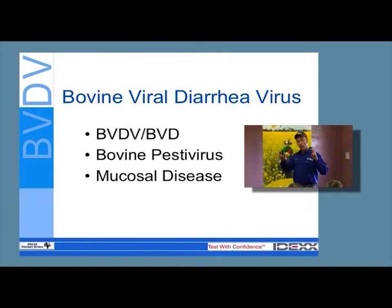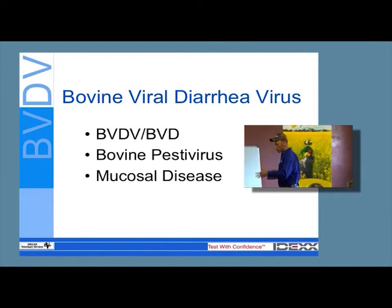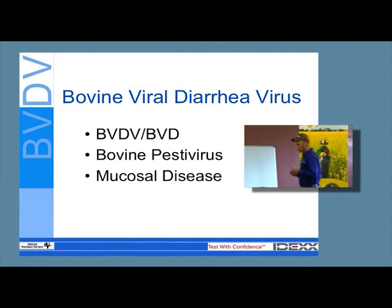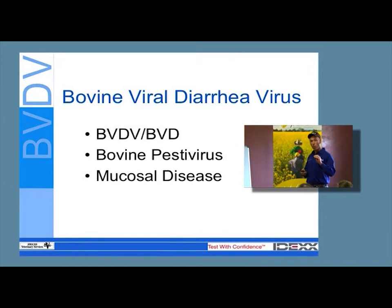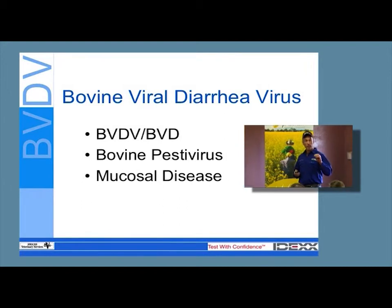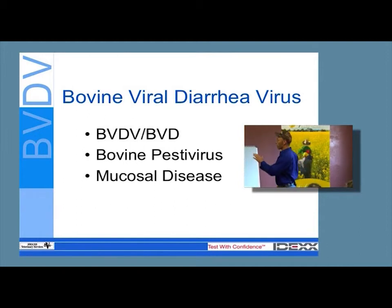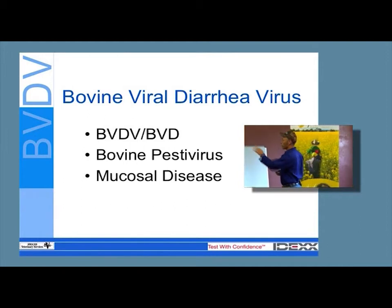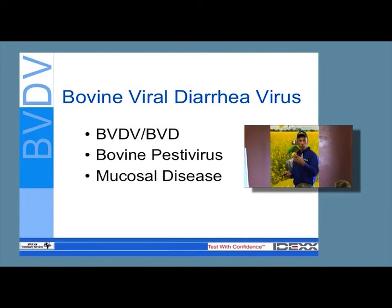In some of these PI animals, the virus will change subtly, and the animal's immune system doesn't recognize that the virus has changed — but it changes in a way that makes it cytopathic, meaning it kills cells. Those animals will develop ulceration throughout their entire gastrointestinal tract, which is lined by mucosa.